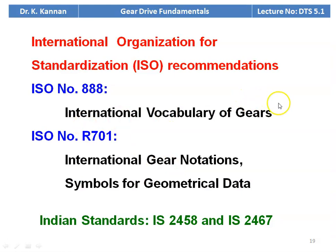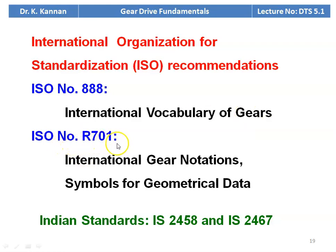There are standards for gear design. The ISO recommendation ISO 888 gives the international vocabulary of gears and various terminology. ISO R701 gives the international gear notation symbols for geometrical data. The Indian standards for gear design are IS2458 and IS2467, which are the standards for gear design under Indian conditions.